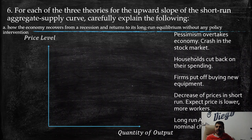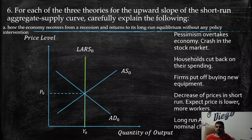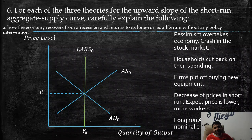The situation here is: on the y-axis we have the price level, on the x-axis we have the quantity of output. Every time we depict this aggregate supply and aggregate demand model, we have three curves: AD0 (aggregate demand), the short-run aggregate supply, and the long-run aggregate supply. Those are the curves we are going to analyze.